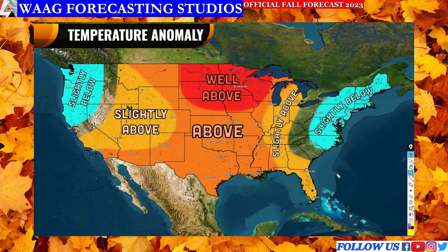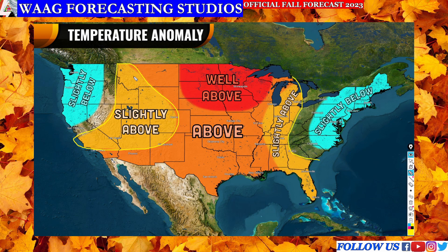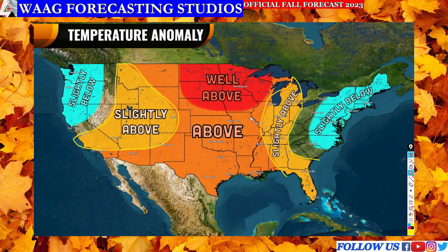Moving on to the slightly above average region — this covers much of the United States. We see that anywhere from Georgia through the Great Lakes and throughout much of the western United States as well. This is due to the persistent ridge and heat dome we've been talking about for many months. If you're in the slightly above average region, it won't be insanely hot — obviously at times it could be very hot, but it won't be too out of the ordinary from what you'd typically see, just slightly increased overall.